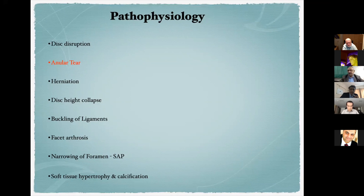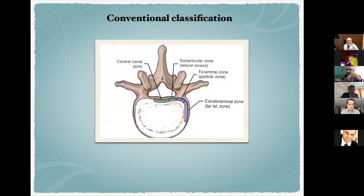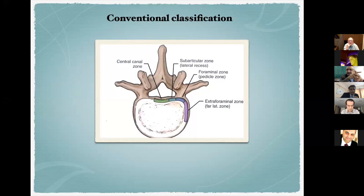Since this determinant step happens at the annular tear, our targeted endoscopy should also be directed towards this lesion. In conventional classification, stenosis is divided anatomically into the central canal, the subarticular zone or lateral recess, the foraminal zone, and the extraforaminal zone.